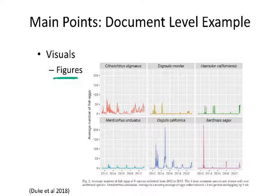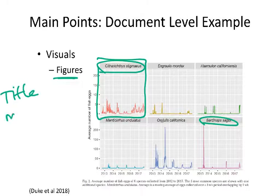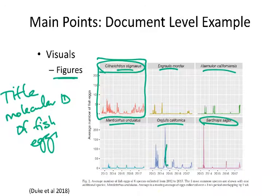Looking at another figure, in addition to differences in the overall number of fish eggs collected across years, we can now look at the data where each panel represents a different species of fish — such as a flatfish and sardines. This builds on the title's mention of molecular identification of fish eggs. This figure goes a step further, showing not only how many eggs were collected but what species they were — and even within that, there's variability across species, with big spikes in sardines for instance, whereas another species stays low throughout.